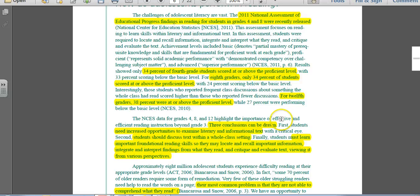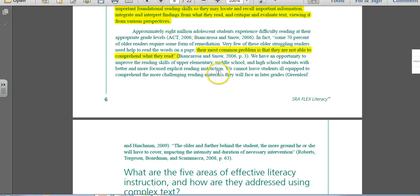Conclusions can be drawn from this information. Students need increased opportunities to examine literacy and informational text. Students should discuss text with a whole class setting. They must learn those important foundational reading skills so they can locate and recall important information. They need to integrate and interpret their findings from what they've read and critique and evaluate text, viewing it from various perspectives.